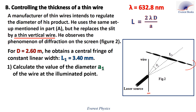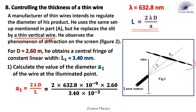Number one: calculate the value of the diameter A1 of the wire. Using A1 equals 2 lambda D over L and plugging in the numbers gives the diameter of the wire equal to 9.68 times 10⁻⁴ meters, or 0.968 millimeters.